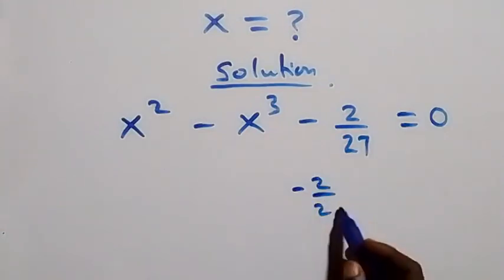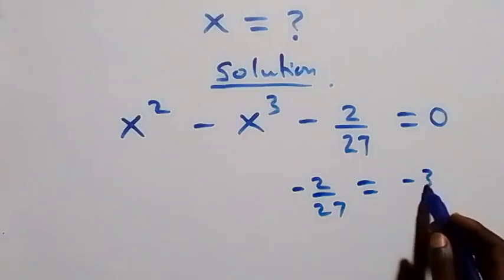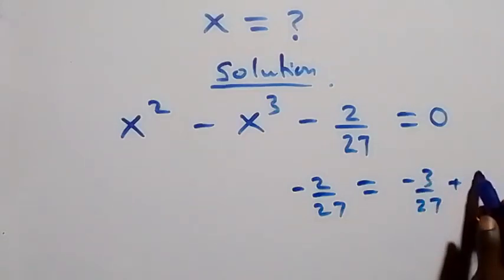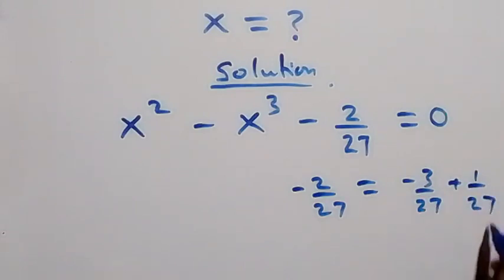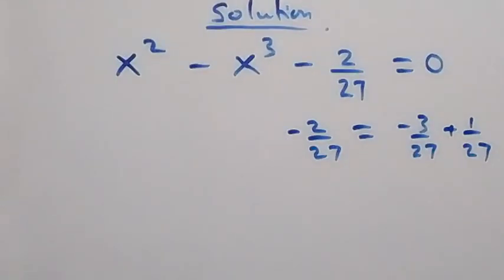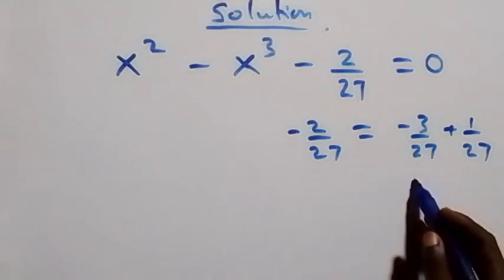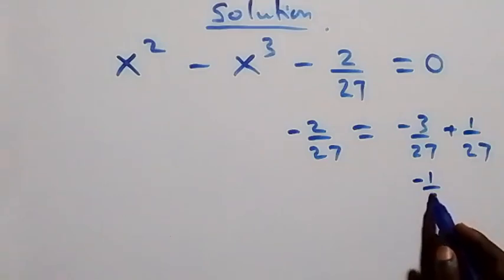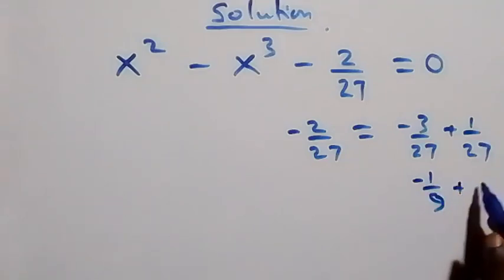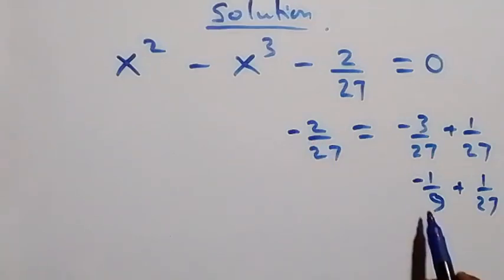From here, the next step we can rewrite minus 2 over 27 as minus 3 over 27 plus 1 over 27. That is minus 3 over 27, which is the same as minus 1 over 9, then plus 1 over 27.